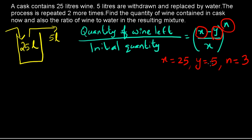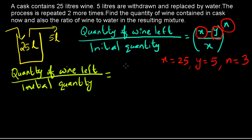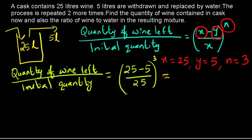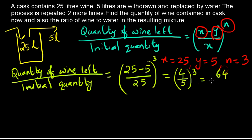With x = 25, y = 5, and n = 3, the ratio of wine left to initial quantity is ((25 - 5) / 25)³ = (20/25)³ = (4/5)³ = 64/125. Here, 4³ = 64 and 5³ = 125.